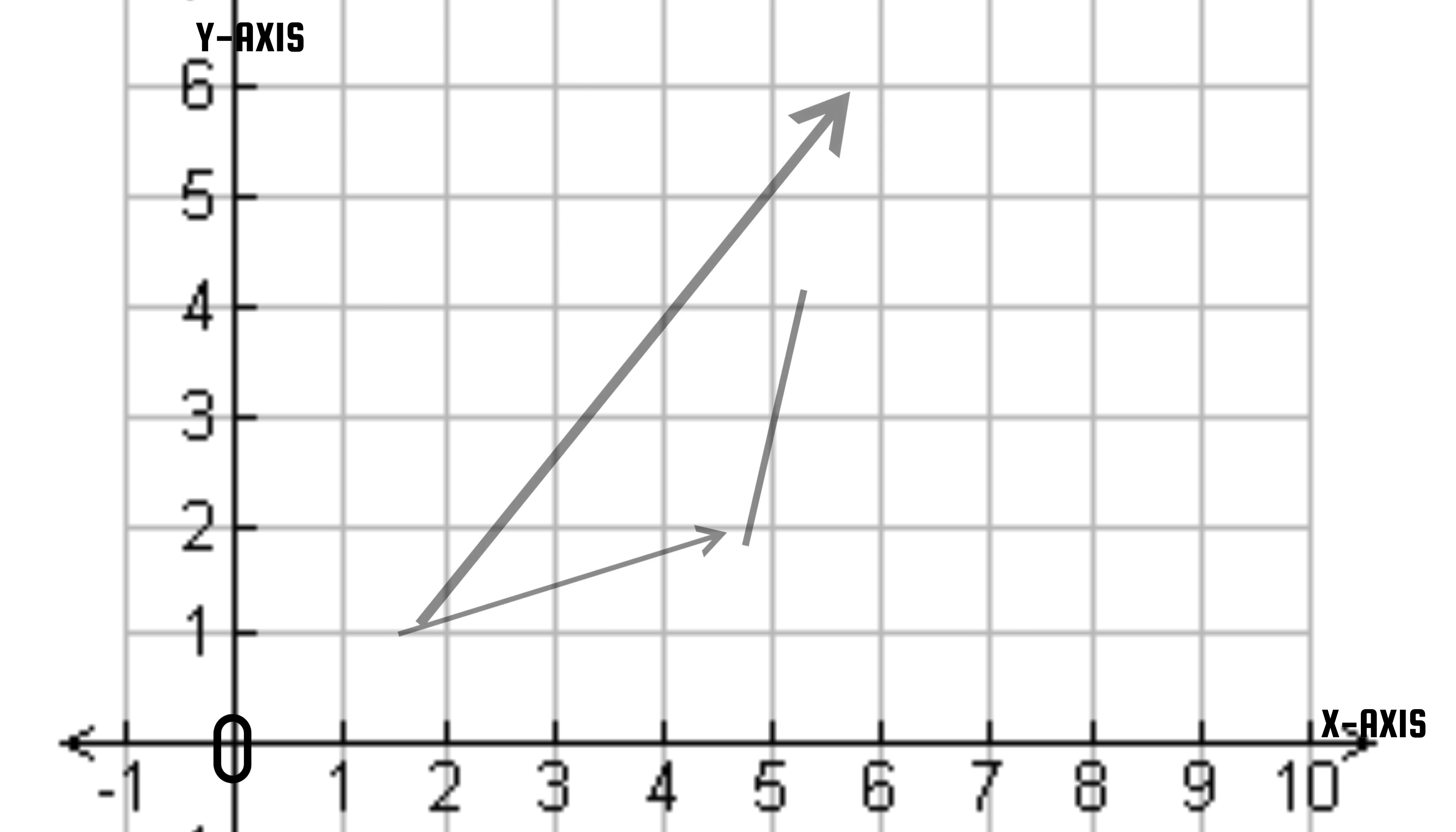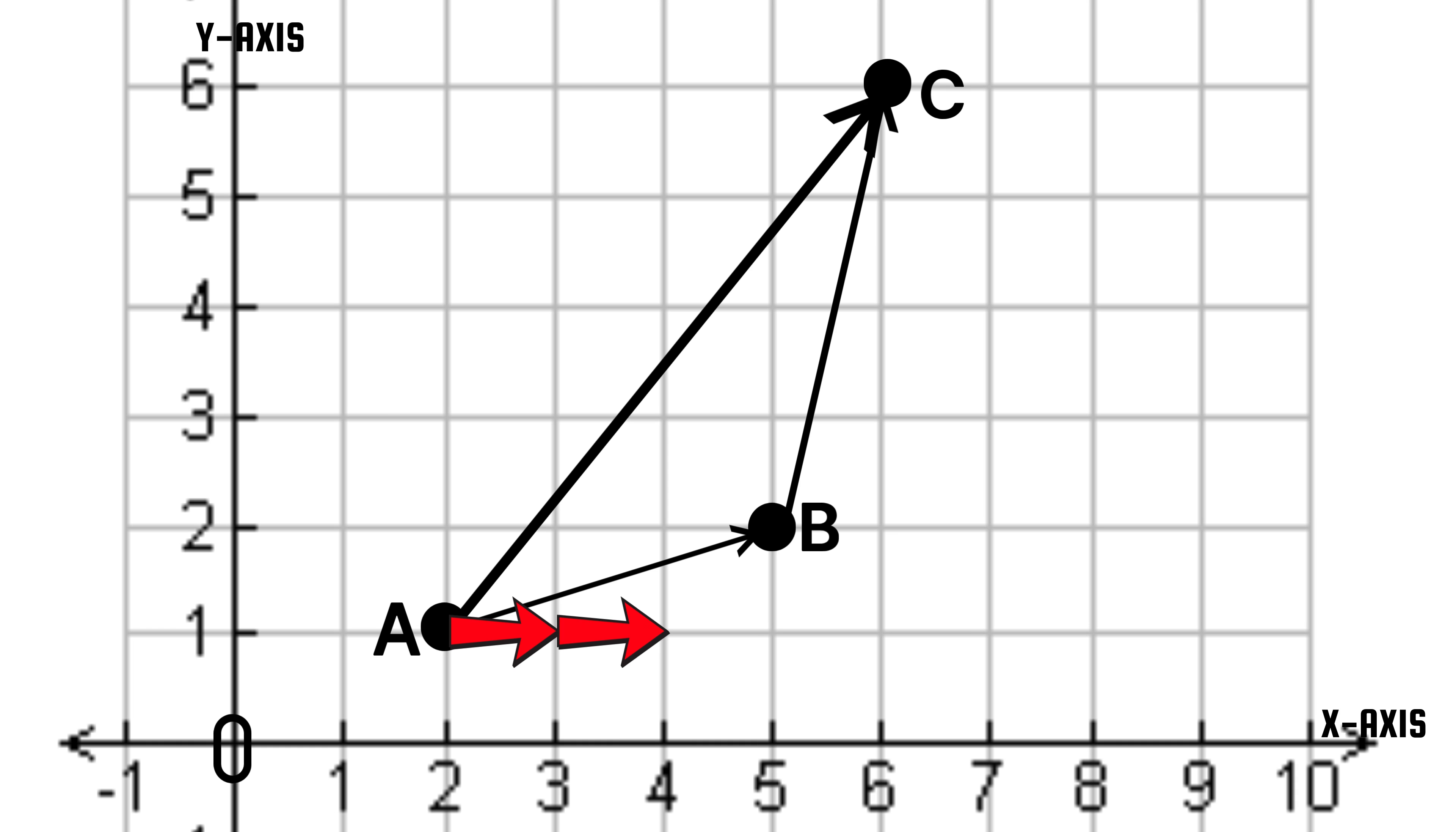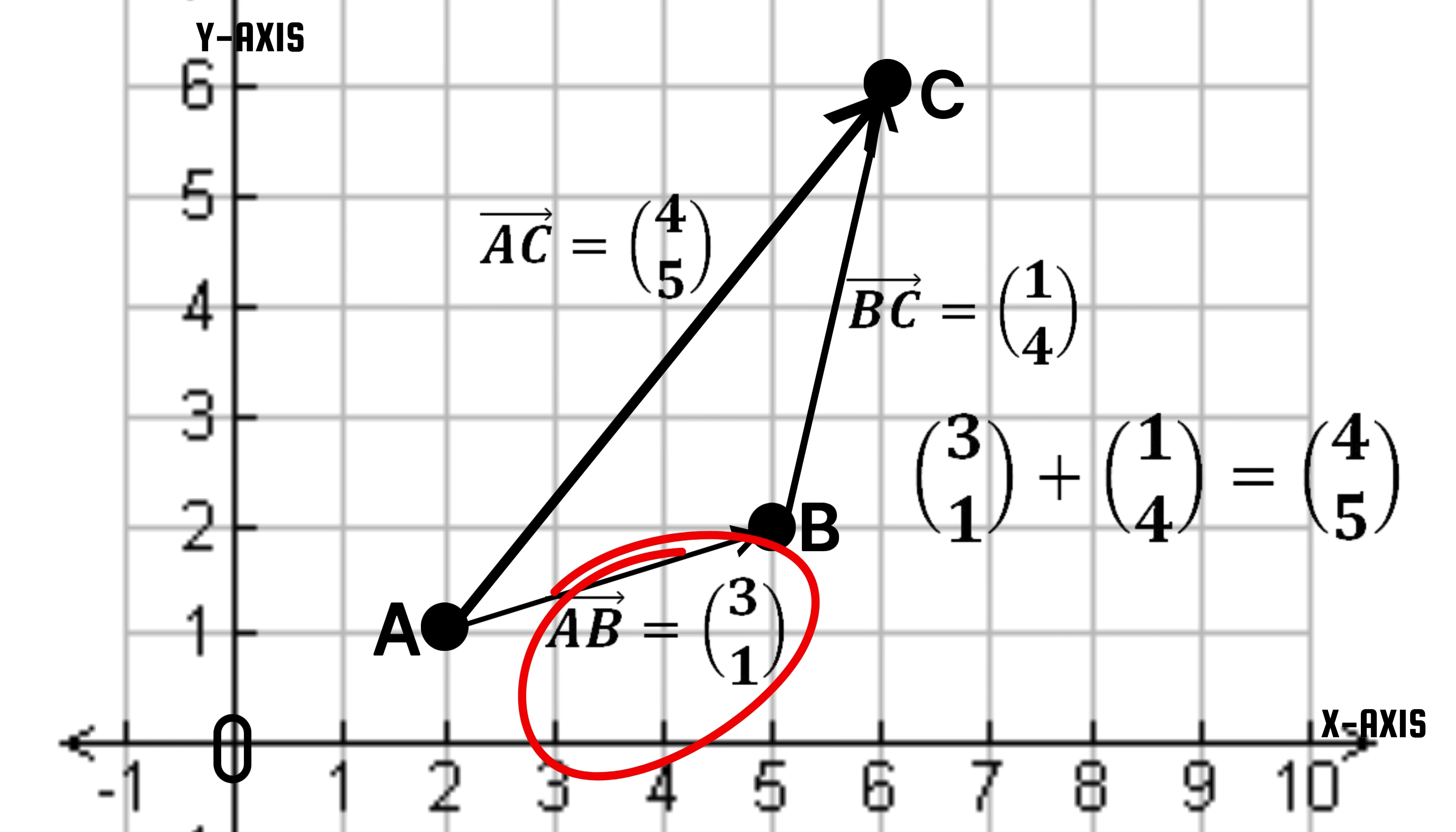Let's form a triangle with vertices at A, B and C. The vector AB is (3,1), the vector BC is (1,4), and the vector AC is (4,5). Notice that when you add the vectors AB and BC, you'll get the resultant vector AC. That's the triangle law of vector addition.